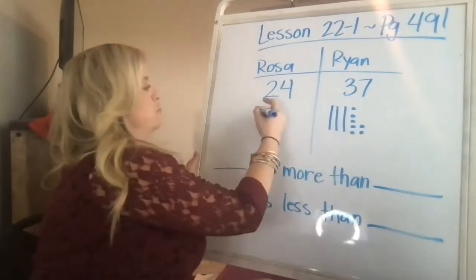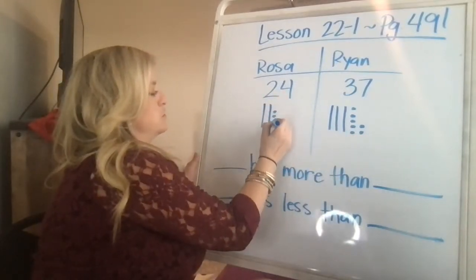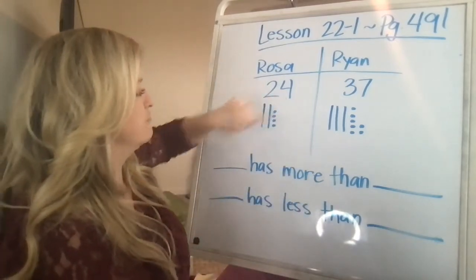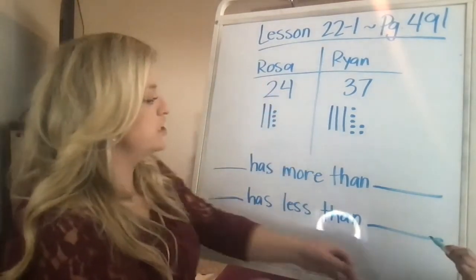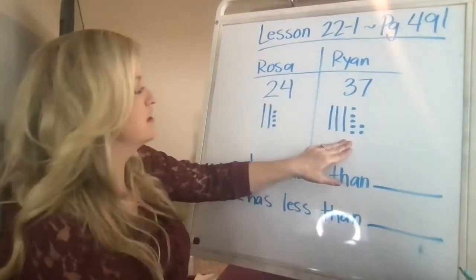Now I'm going to draw 24, 10, 20, 21, 22, 23, 24. That stack is not complete because it's one less than five, which is four. So hopefully now you can see that Ryan has more with 37.